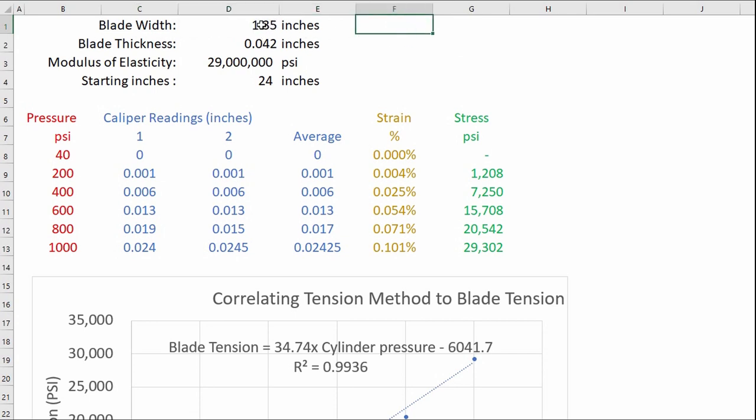That 1.35 is from the back side of the blade to the bottom of the gullet. Keep in mind that the tooth really does not count for anything in terms of how it's going to affect this tension calculation.